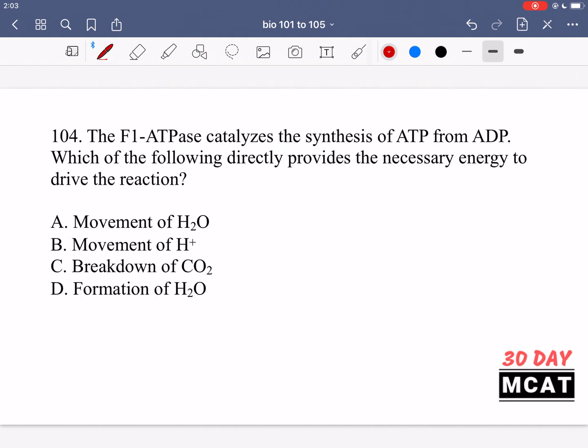In question 104, it says the F1 ATPase catalyzes the synthesis of ATP from ADP, which of the following directly provides the necessary energy to drive the reaction. So this enzyme synthesizes ATP. So this is ATP synthase. So what happens in the mitochondria, you have an inner layer and you have an outer membrane. In between them, you have this inter-membrane space right here.